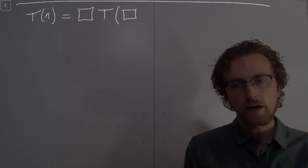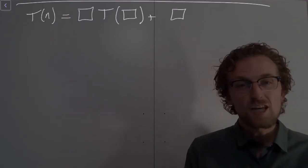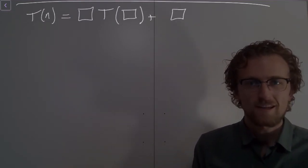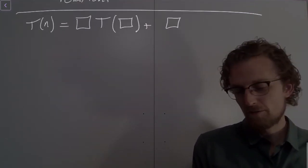right? So T, I'll put another block in there, plus some function of n, right? So this is the basic format you're going to see. So here is the, oh, and then also you need to have some kind of initial condition.